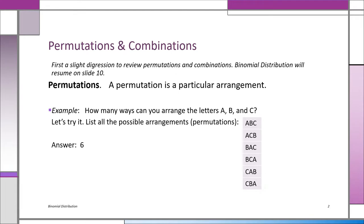ABC is different from ACB — different arrangements. You can also do BAC, BCA, CAB, or CBA. So you really have six ways to arrange the letters A, B, C. Using a calculator, you'll see it'll be three permutation three.